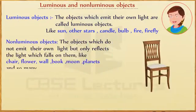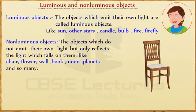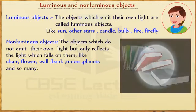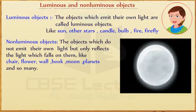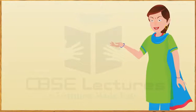Non-luminous objects: the objects which do not emit their own light but only reflect the light which falls on them — like chair, flower, wall, book, moon, planet, and so on. Nature of light.